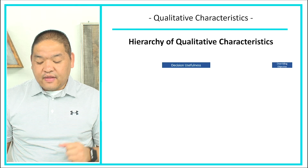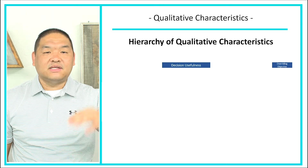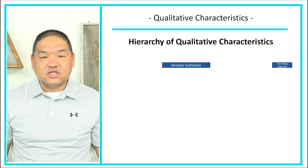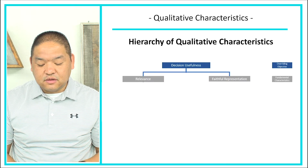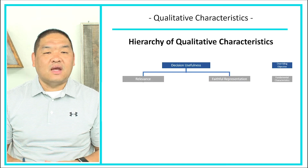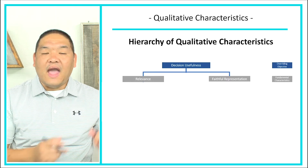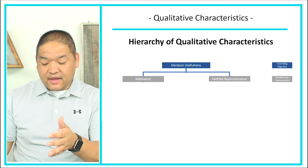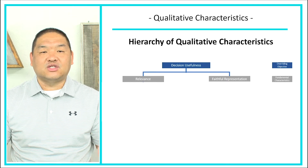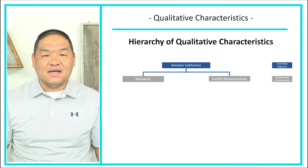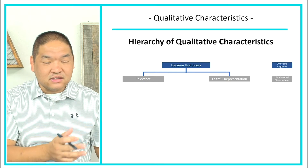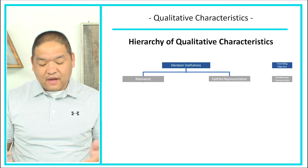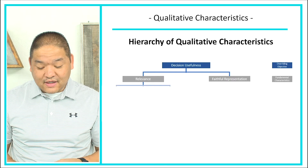These are things we should be thinking about to make sure financial statements are appropriate for our shareholders. The first and main thing is that we want to make sure we have decision usefulness. We accomplish decision usefulness by making sure financial statements are relevant and have faithful representation — that's called the fundamental characteristic. Fundamentally, the financial statements must be relevant and must have faithful representation.